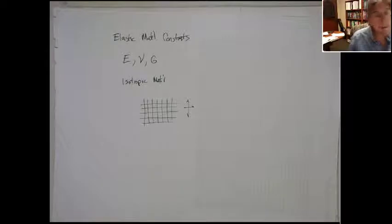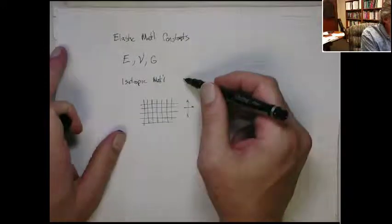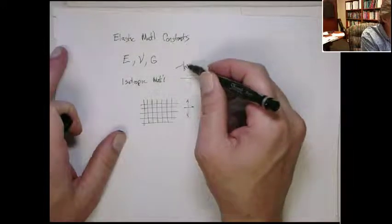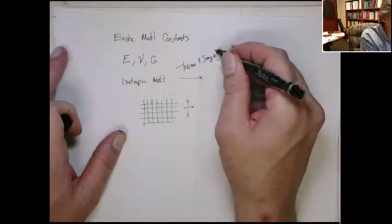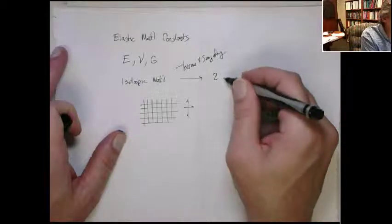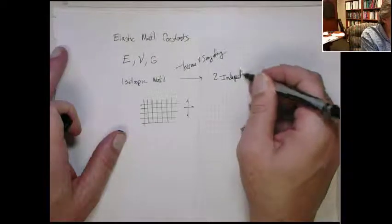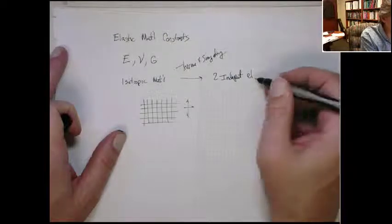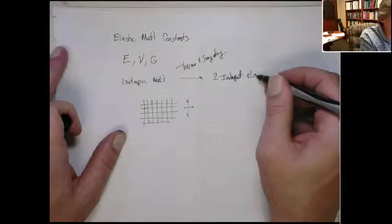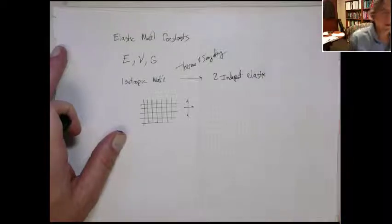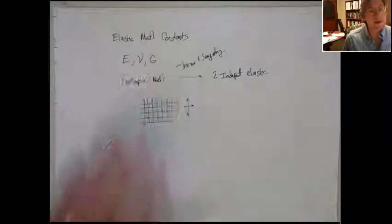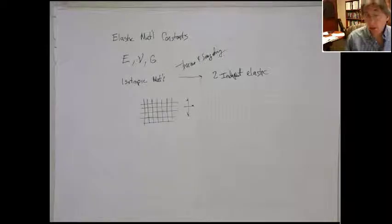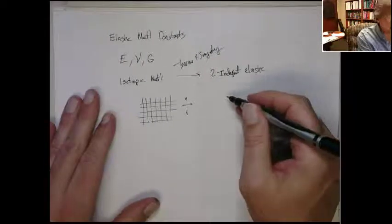But if you have an isotropic material, which is what we're going to deal with for this entire class, you can show from thermodynamics and from symmetry that there are only two independent elastic constants. So here I have three. In fact, there's only two that are independent. So there's a relationship between those three in particular.